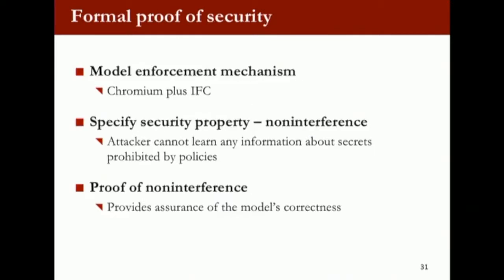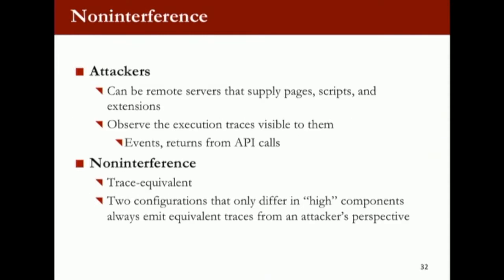For the formal proof of security, there's no hope of proving anything directly on the implementation since it's too messy. Instead, we model the main parts of the browser functionality, model the taint-tracking part, and then define the property we think we can prove. We define our version of non-interference. All non-interference definitions try to say: the attacker cannot learn any secret by observing public output or by altering the public input. We define what's the secret in our system, what's the attacker's observation, and then prove that the model has this property — some form of non-interference property.